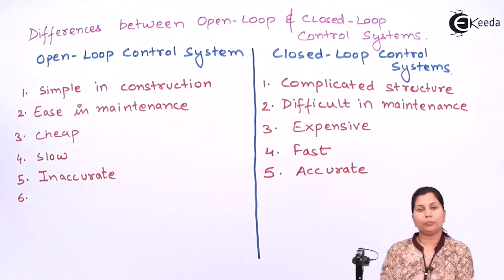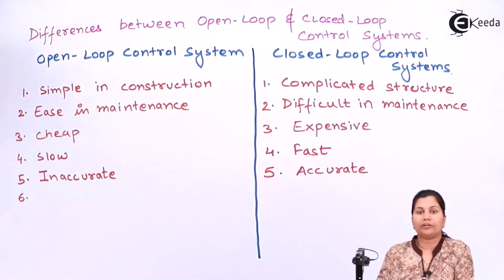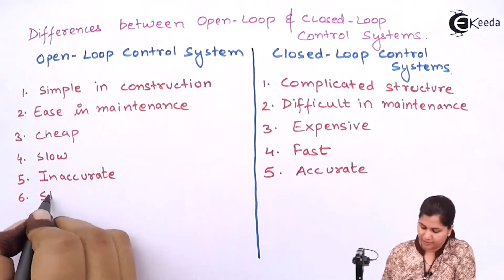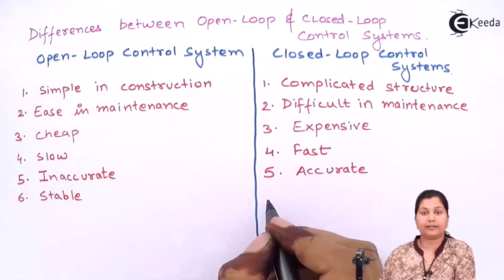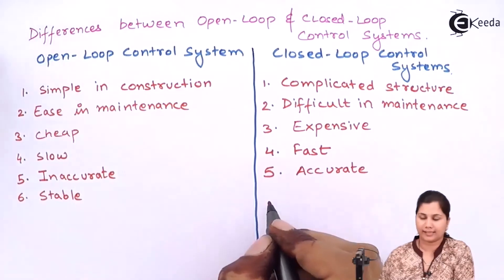The open loop control system is more stable — there are no stability problems in them. Whereas the closed loop control system can be unstable.